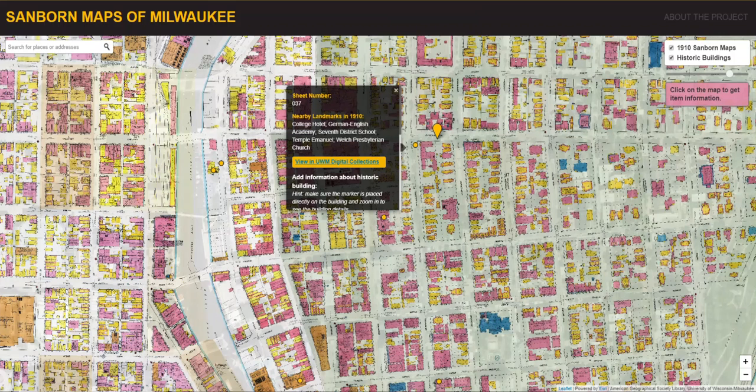When the map first loads, the JavaScript calls the servlet to query all the historic buildings in the database and display them as points on the map. When the user clicks a point on the map and submits information to the database, the JavaScript file calls a different function in the servlet to insert the information into a new record in the database and then display it back on the map with a tooltip.